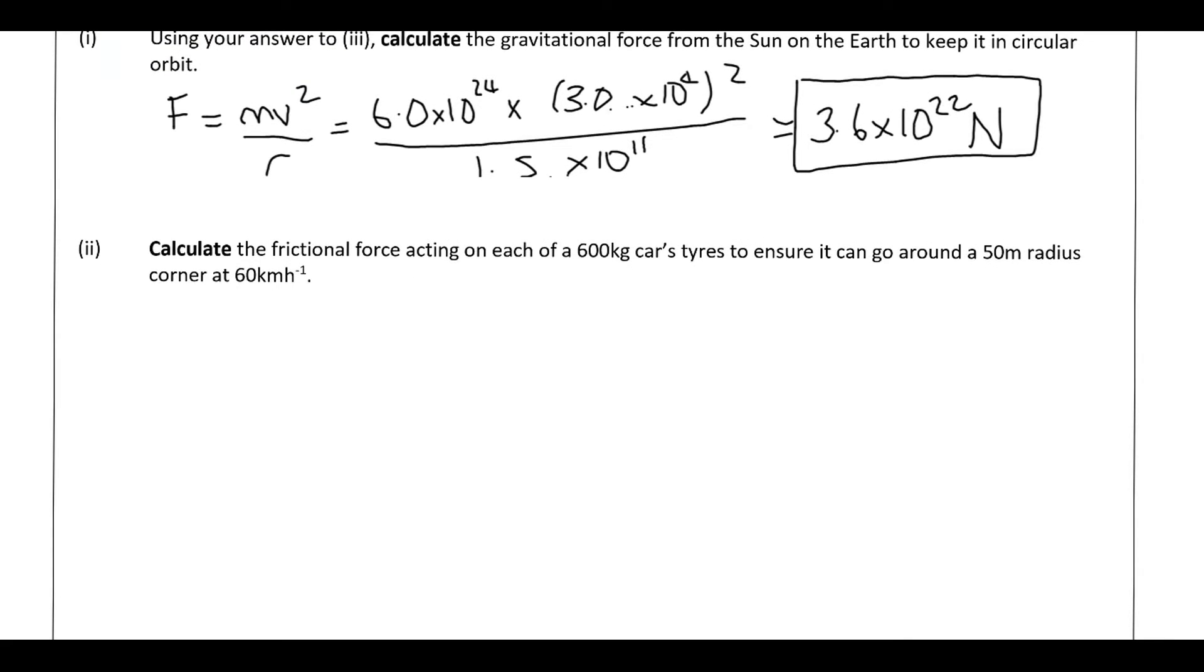Okay, so next question, car going round a bend. So if we sketch what this looks like, so essentially we've got a bend sort of like this, with your car essentially going round like this. And this, so this is like your centre of the circle. It tells you it's a 50 metre radius, so it's like this is a section of a circle with a 50 metre radius. And we've got the velocity there.